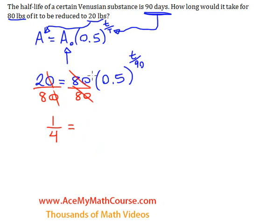Please never make the mistake of multiplying these two. We can't multiply them because there's an exponent there. But many students would go right away and say, oh, 40 to the power of t over 90. Please don't make that mistake. So we get a quarter equals 0.5.